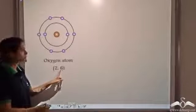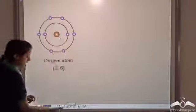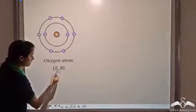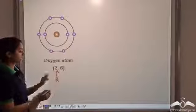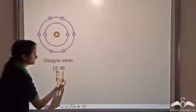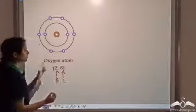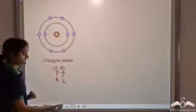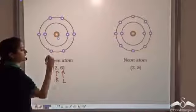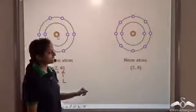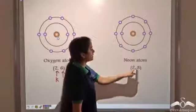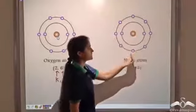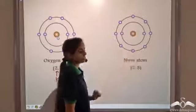For oxygen, the electronic configuration is 2,6 — the K shell has 2 electrons and the L shell has 6 electrons. Similarly, for neon, which has 10 electrons, the first shell has 2 electrons and the remaining 8 electrons are present in the second shell, the L shell.